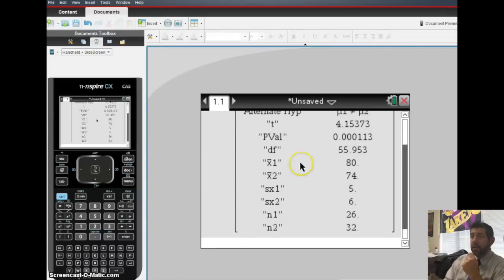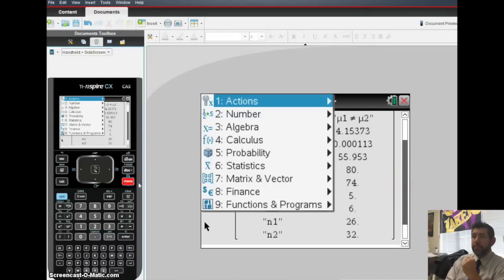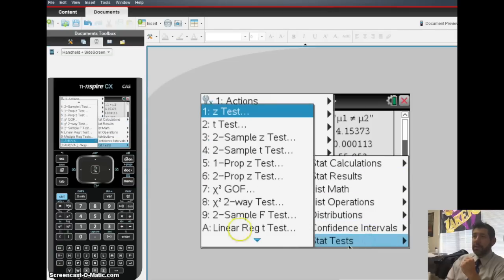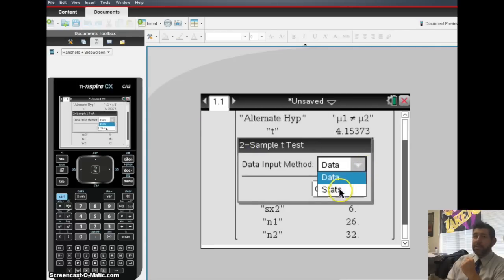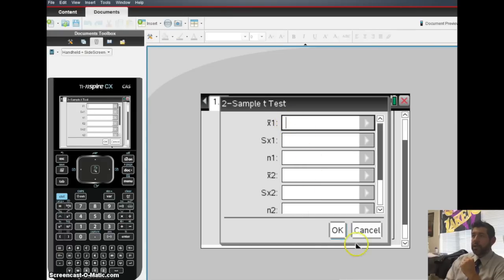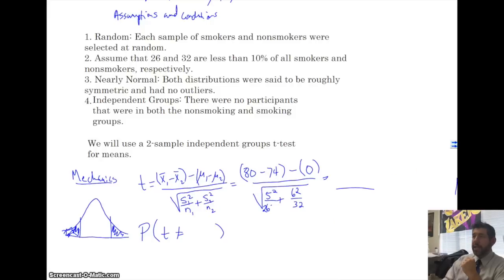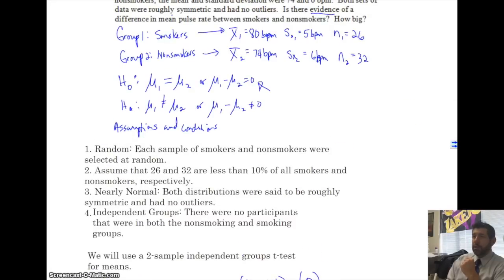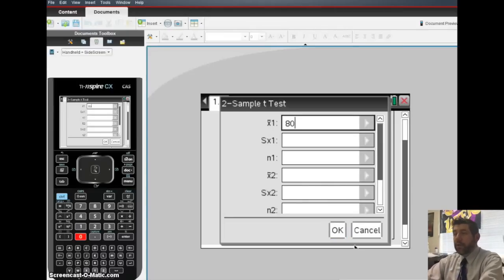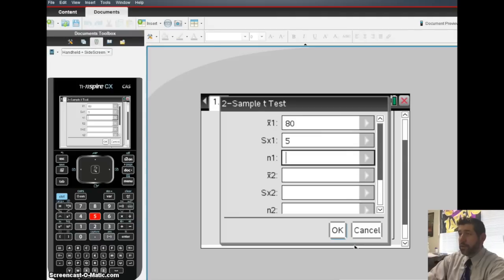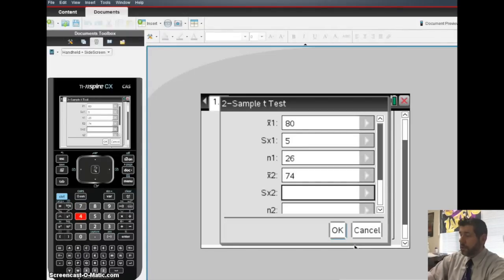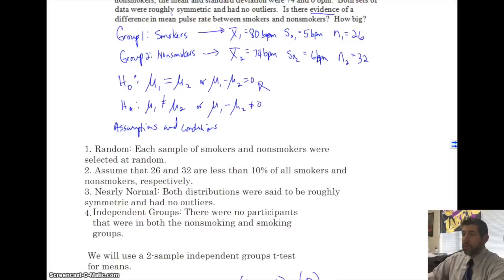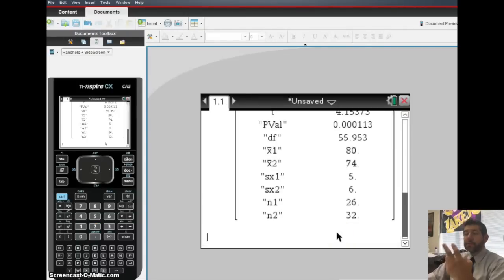And I kind of have it here already, but I'm going to show you how to do that. So, we go to menu, statistics, stat tests, and we have a two-sample t-test. So, it's number 4 in our TI Inspire. Two-sample t-test. We are not using data. We are using stats. Our x1 was 80. Our s1 was 5. And our n1 was 26. Our x2 was 74. And our s2 was 6. And our n2 was 32. Hit OK. And then it gives us all the information that we need.